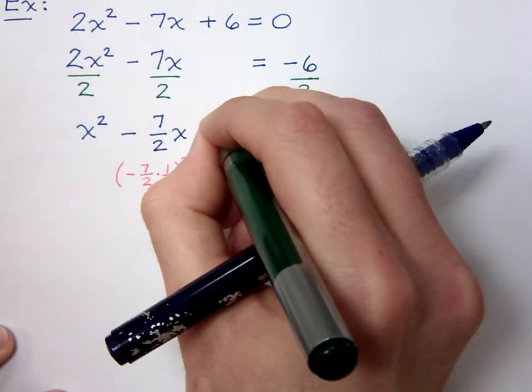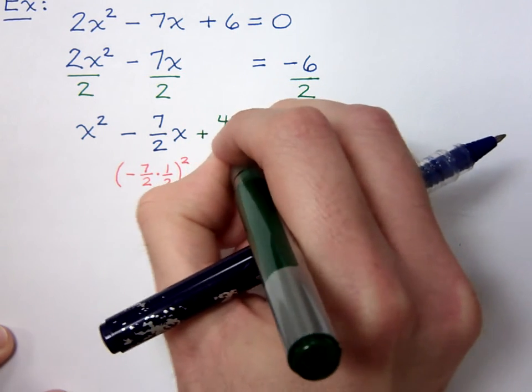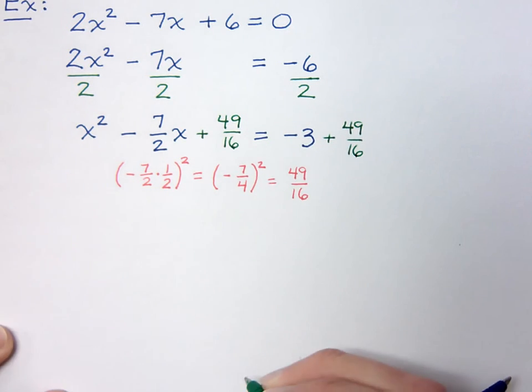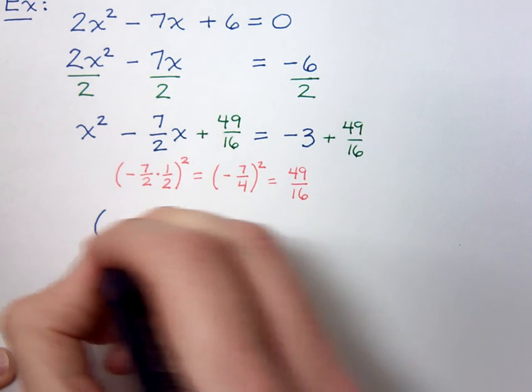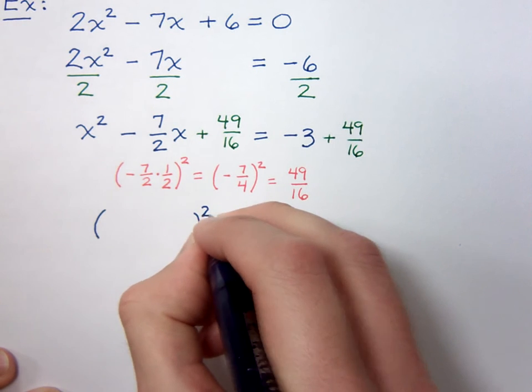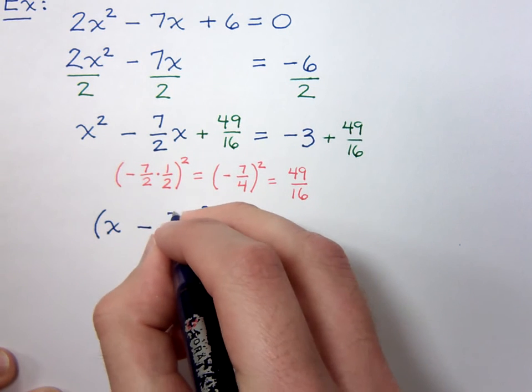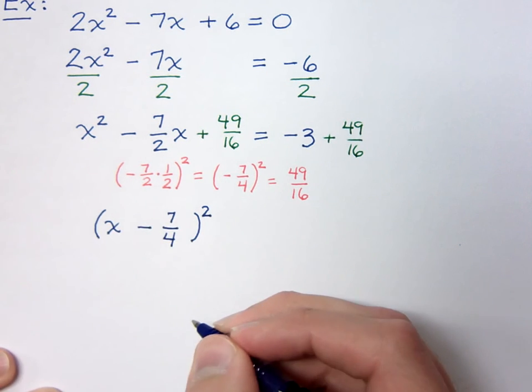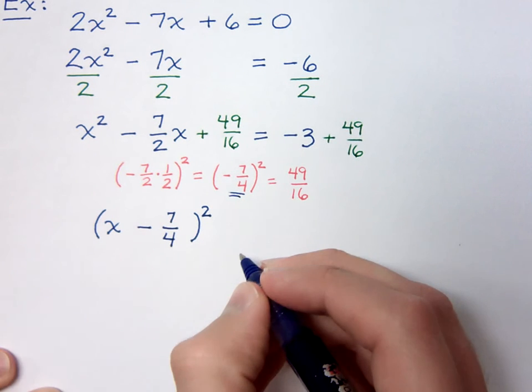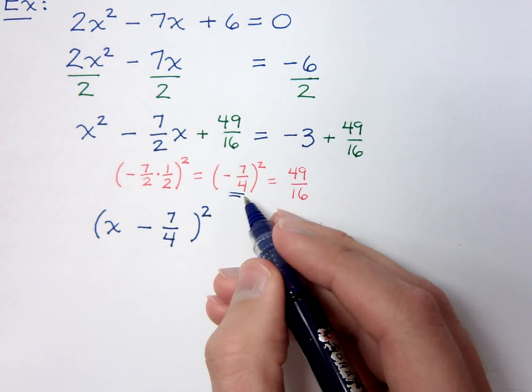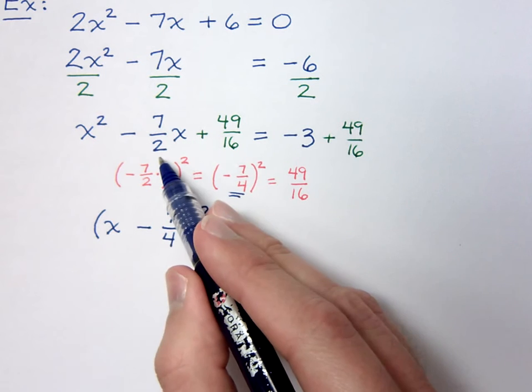So, I'm going to add 49 over 16 to both sides. So that's the magic number that we needed to add to complete the square. Again, we wanted to add this special number so that the left side could factor as a binomial square. And it will factor as x minus 7 fourths. I'm not pulling the 7 fourths out of thin air. It's this guy right here. Before you squared to get the 49 over 16, you had negative 7 fourths. This is the number that connects between the 49 over 16 and the negative 7 halves.